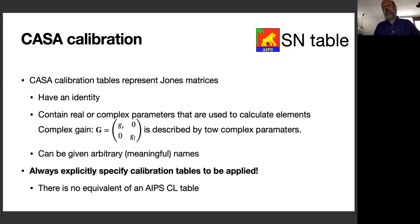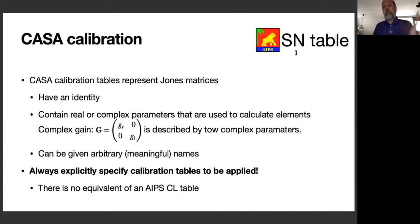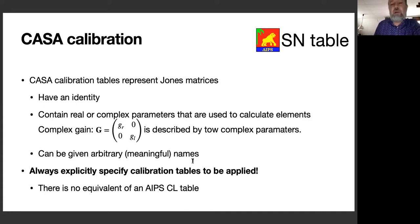CASA calibration tables are equivalent to AIPS SN tables in that they store solutions for a particular effect. However, CASA does not have an equivalent to the AIPS CL table. In AIPS, you run CLcal to interpolate solutions onto a regular grid and add them to your cumulative CL table, then apply the latest CL table. In CASA, you only have the individual solution tables and must always specify exactly which solutions you want to apply to your data.